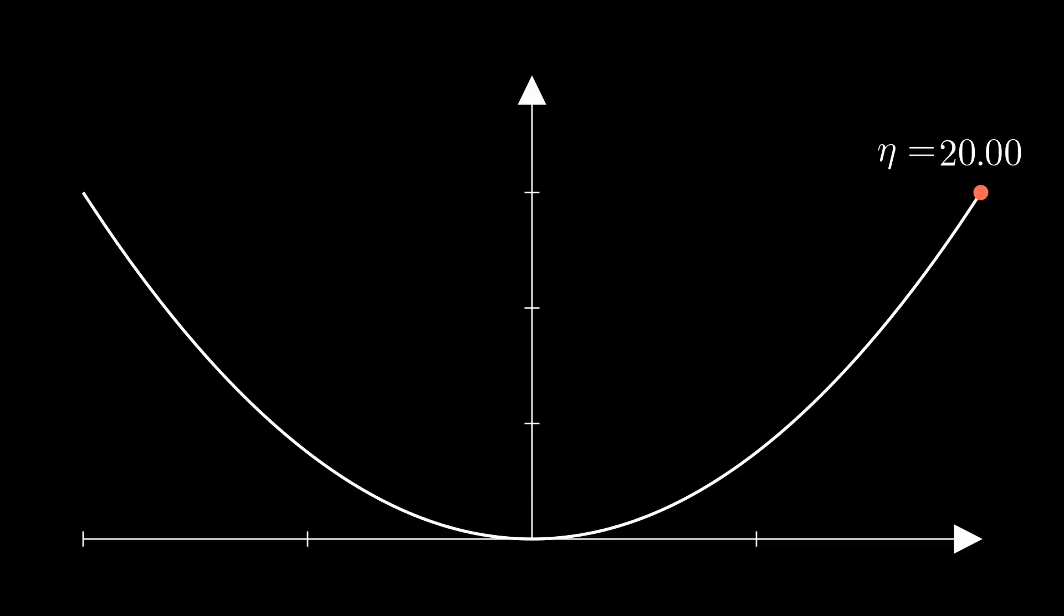If the step size is too large, we might overshoot the minimum. And if the step size is too small, we fail to converge, which is bad for business.